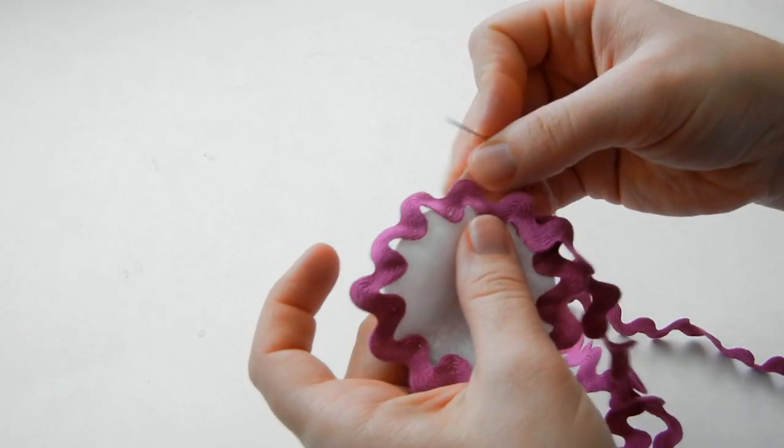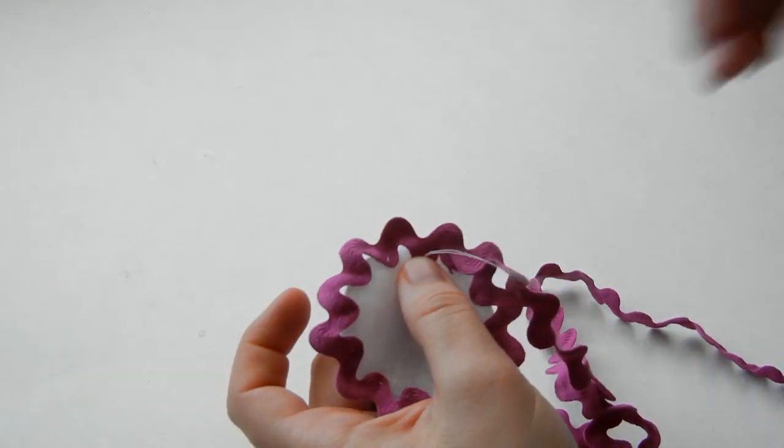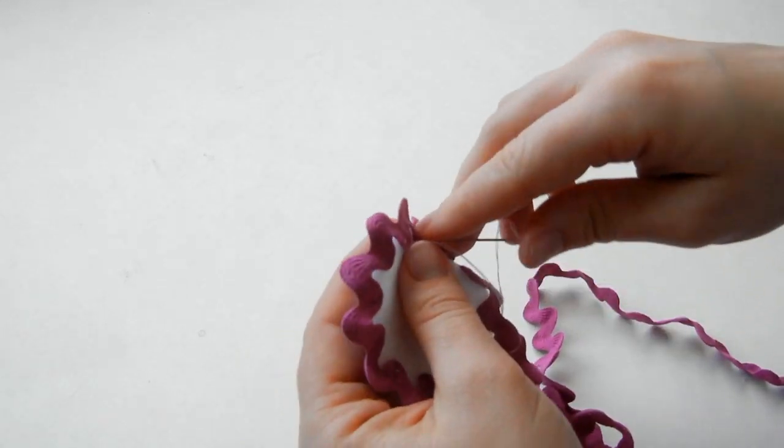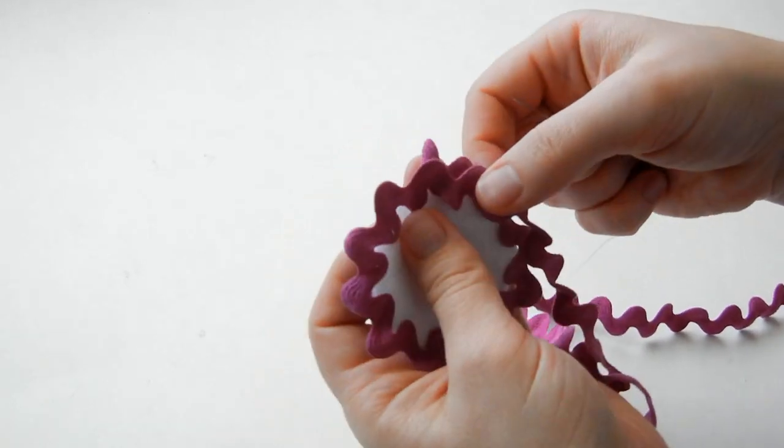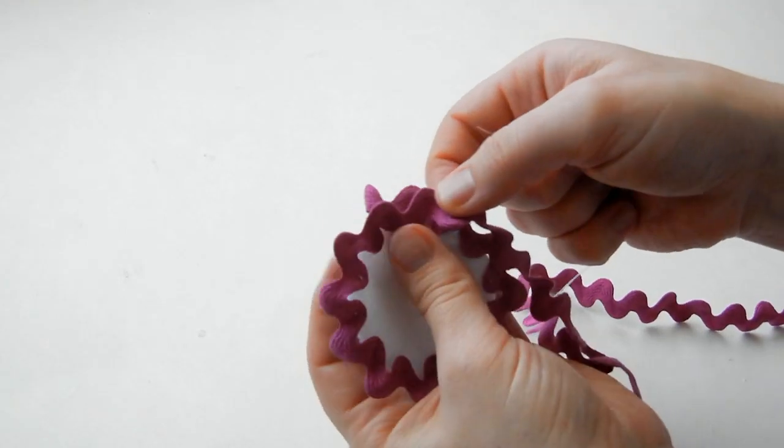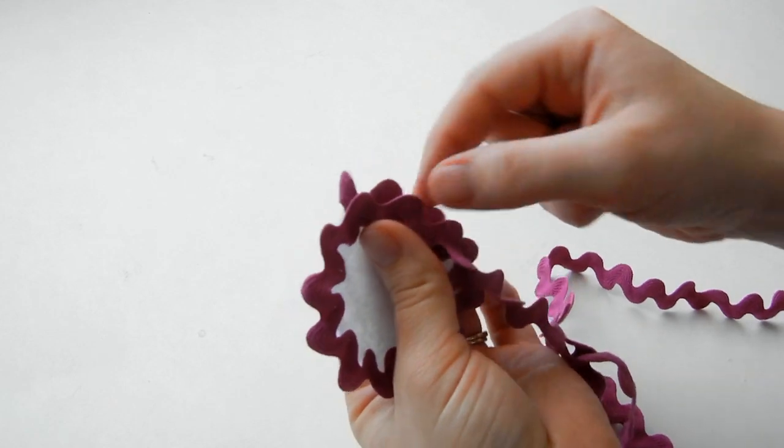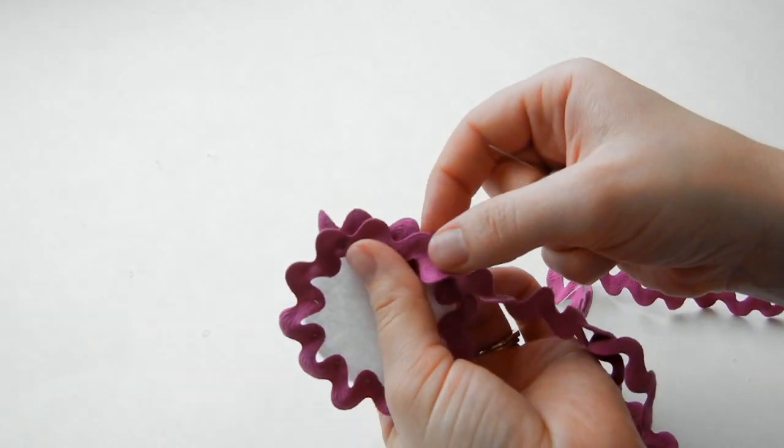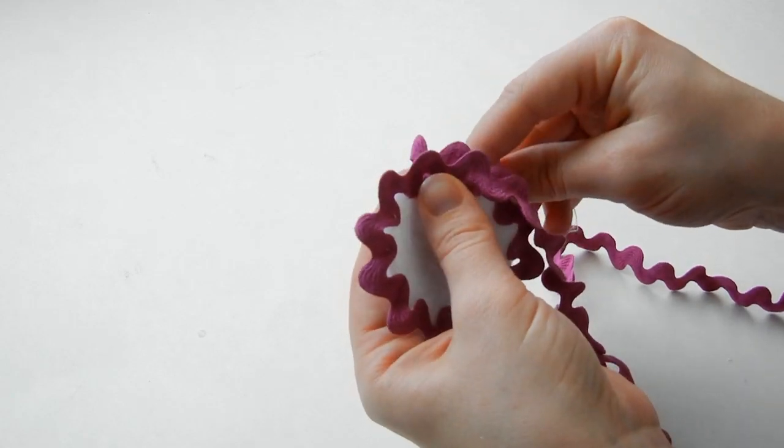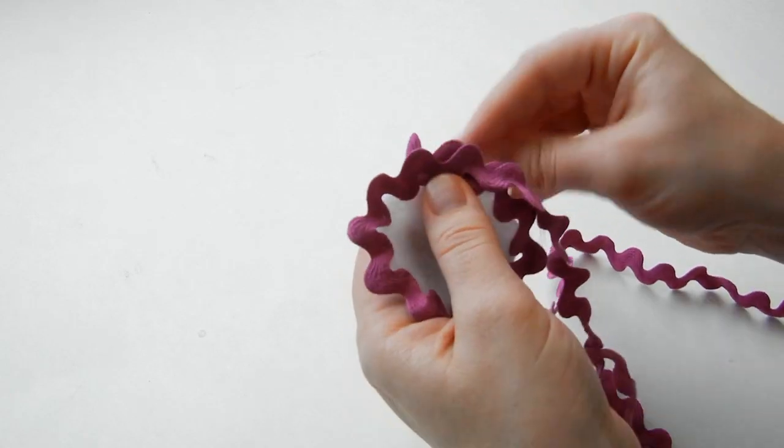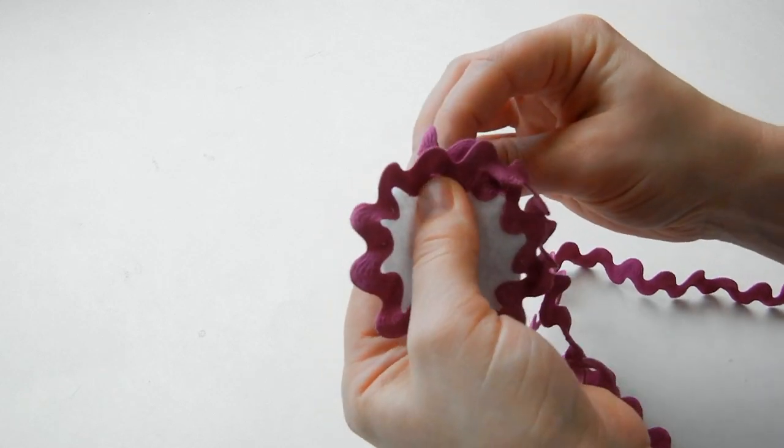And then when you get to the beginning, you want to start stitching the rickrack onto the inside, going around the felt circle again. And then I like to make it so the top goes in the middle of your top edges. Sometimes that doesn't work out and that's okay. But for the second row, it's pretty easy to do.